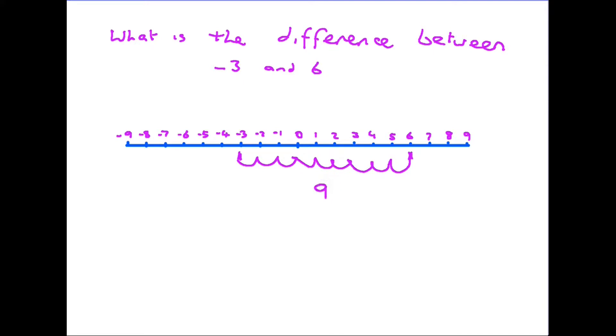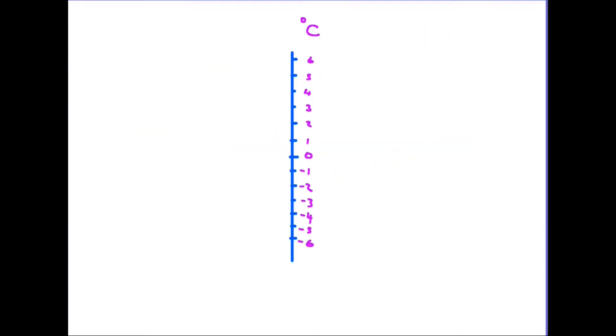You may in fact be more familiar seeing a number line in a vertical format like this, because this is very similar to a thermometer looking at temperatures, degrees centigrade in this case. And it works exactly the same way: the temperature falls and goes six, five, four, three, two, one, gets down to zero freezing, and then starts getting even colder and we go into minus numbers.